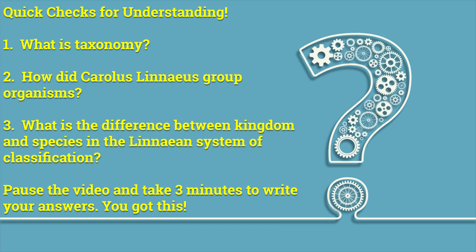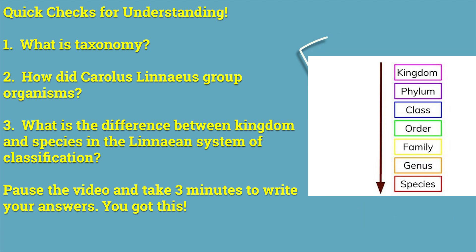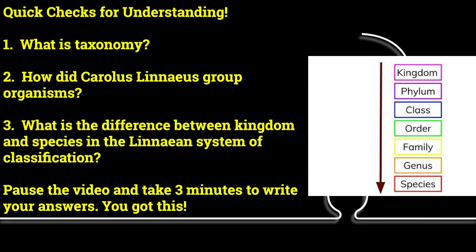Quick checks for understanding. Number one: what is taxonomy? Number two: how did Carolus Linnaeus group organisms? Number three: what is the difference between kingdom and species in the Linnaean system of classification? Pause this video and take three minutes to write your answers. You got this.